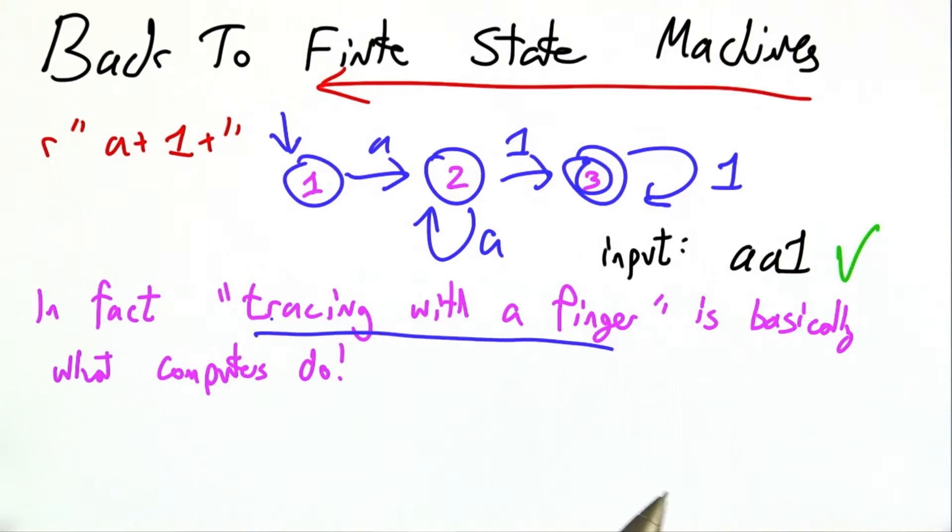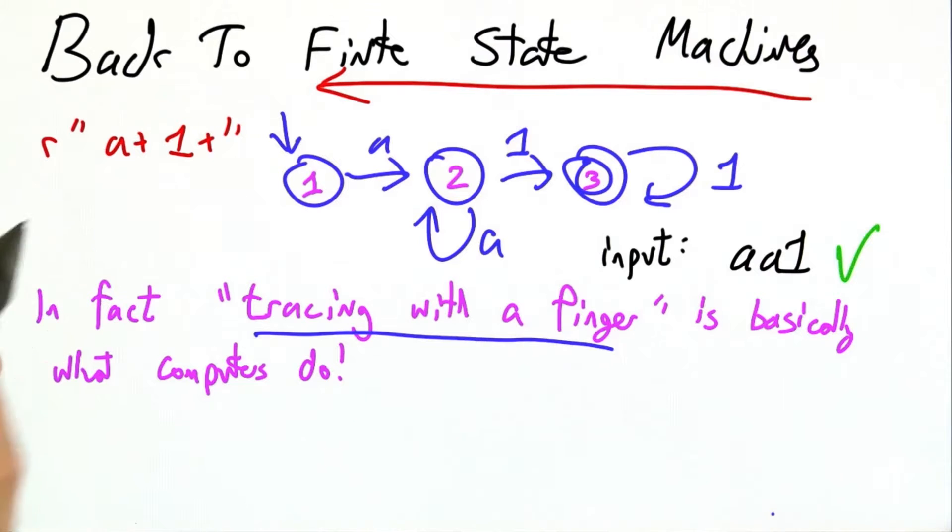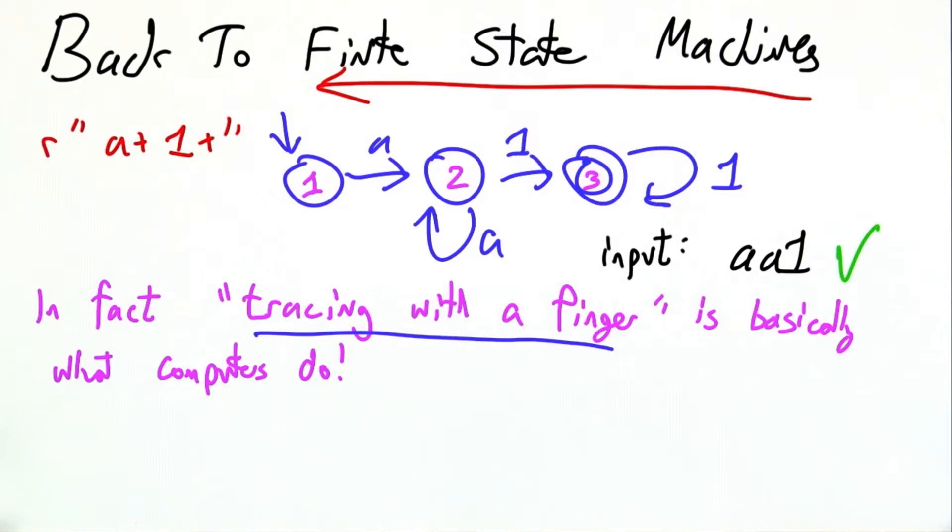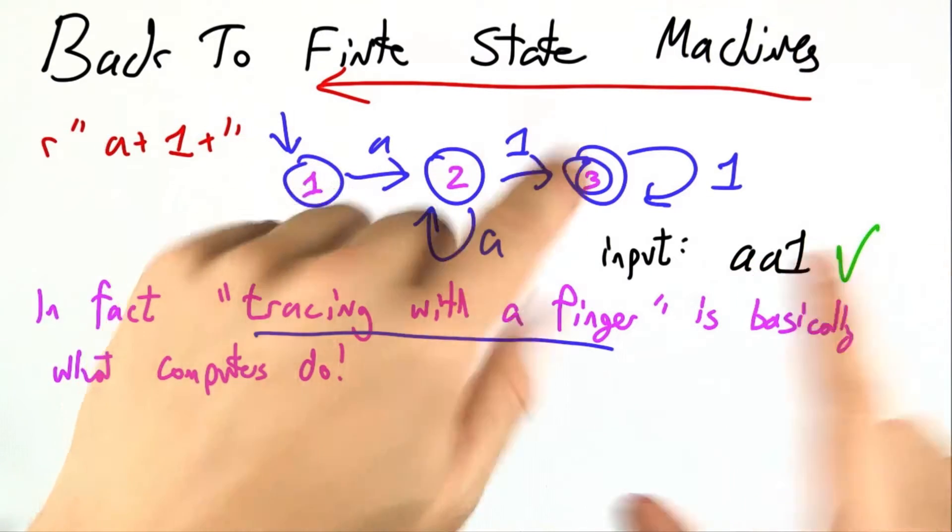Surprisingly, this super high-tech sounding trace it with my finger approach is actually pretty much exactly what computers do under the hood to check strings against regular expressions or evaluate finite state machines. You really only have to keep track of where you are in the input and which state you're in and not much else.